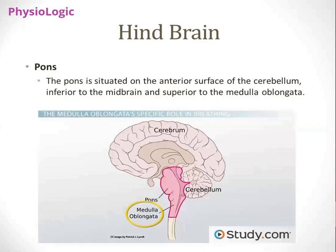The last part of the brain is the hindbrain, composed of three main structures: pons, medulla oblongata, and cerebellum. The cerebellum lies behind the pons and the medulla. Again looking at the sagittal section, the structure above the spinal cord is the pons, shown with a yellow circle, and behind this structure is the cerebellum. The pons is situated on the anterior surface of the cerebellum. It is inferior to the midbrain and superior to the medulla oblongata.